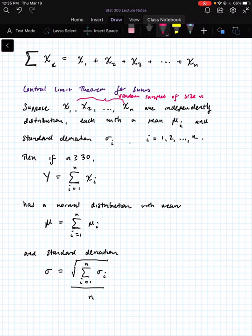This means we're taking random samples of size n. Independently means that one happening doesn't affect the other one. Each one has a mean and a standard deviation. They could all be different, they could all be the same, some of them could be different, some of them could be the same.